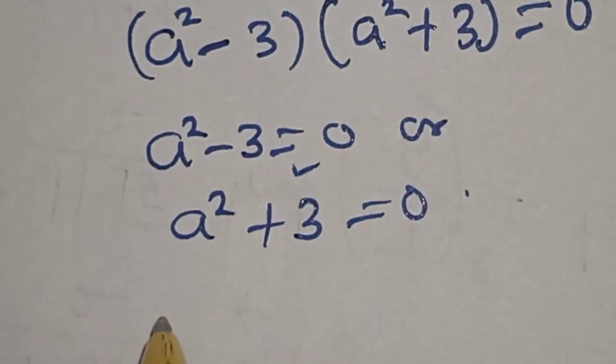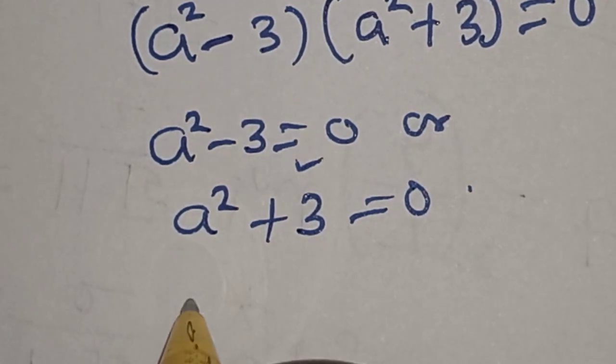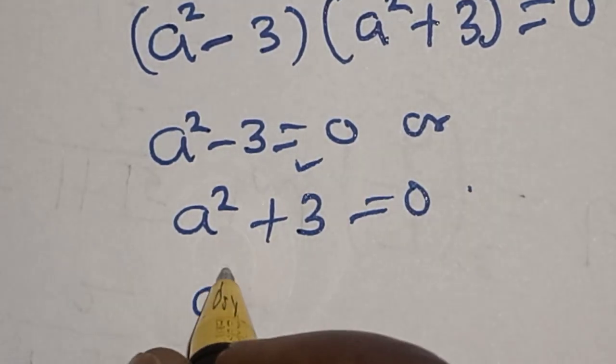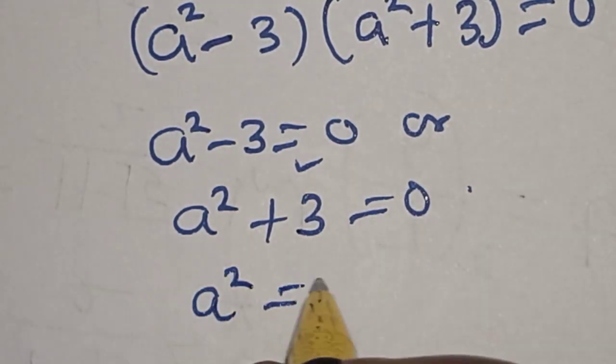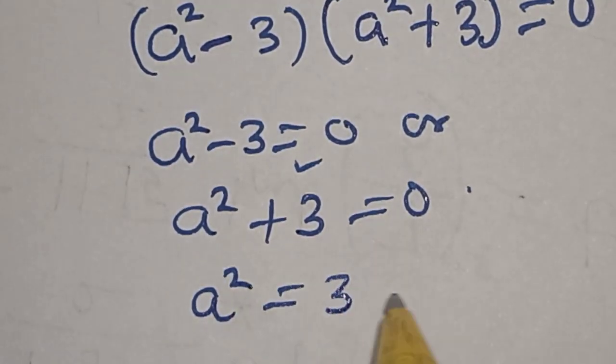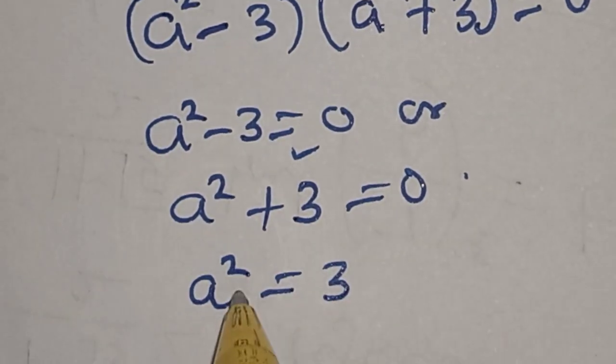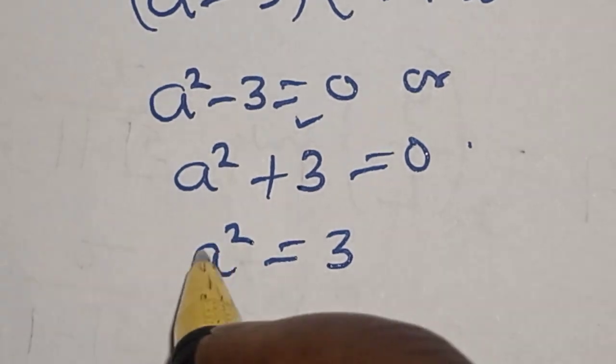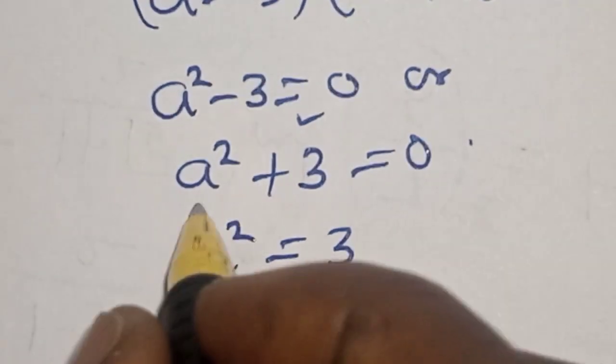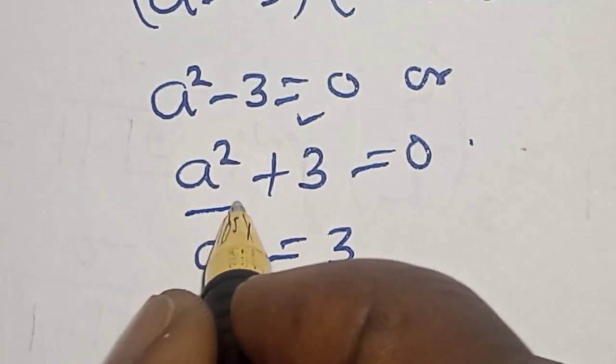From the first case, A squared is equal to 3. Now let's take the square root of both sides.